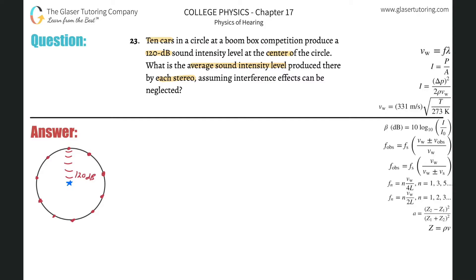What we have to realize is that the short answer might be: well, if it's 120 decibels and there's 10 cars, just take this and divide it by 10 and we're going to get our answer of 12, right? It's not that straightforward. The reason why is because the decibel value is not an absolute scale, so we can't simply just divide or subtract.